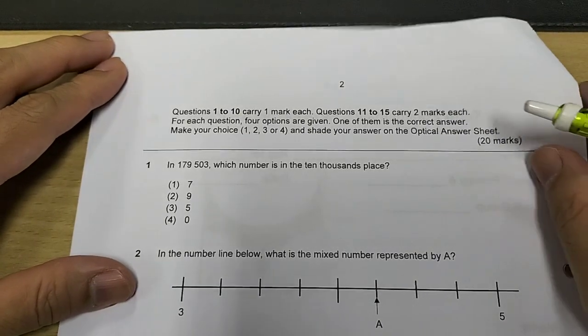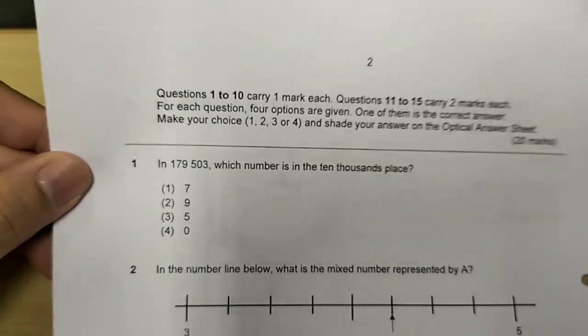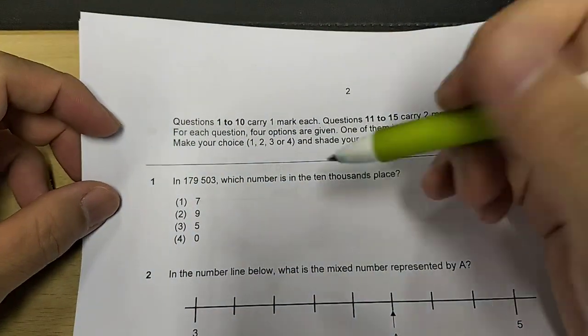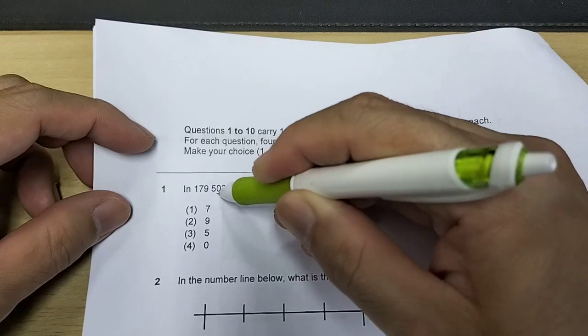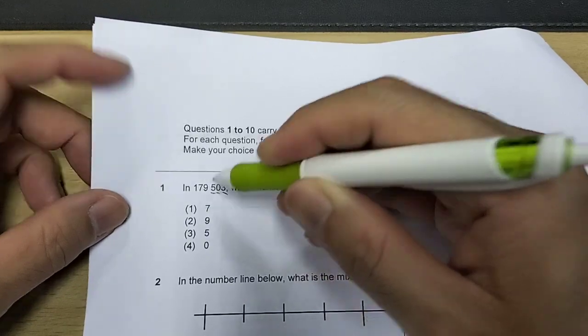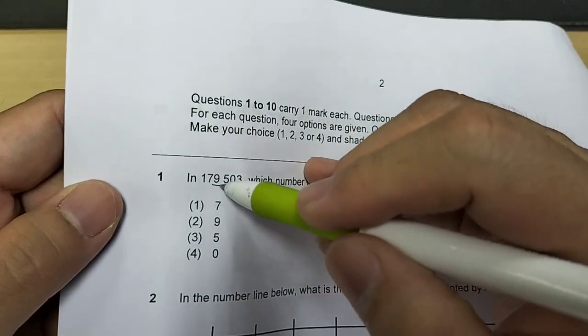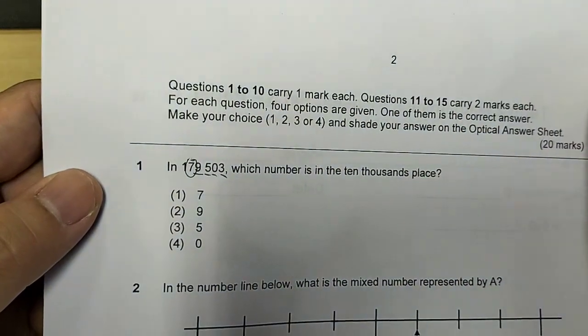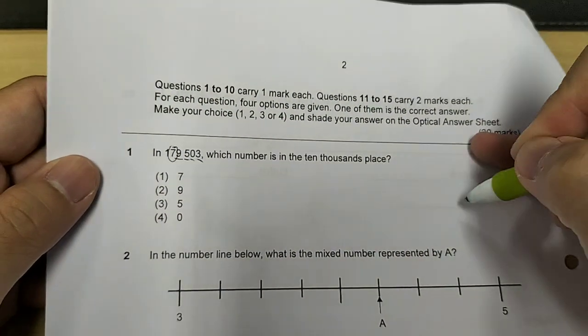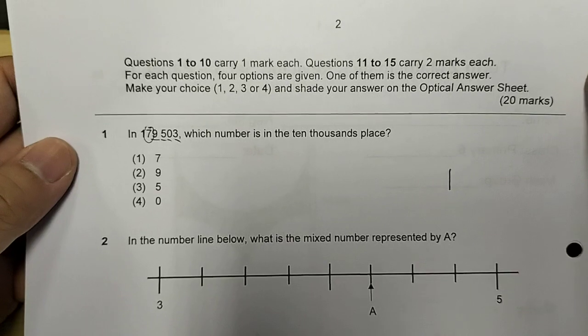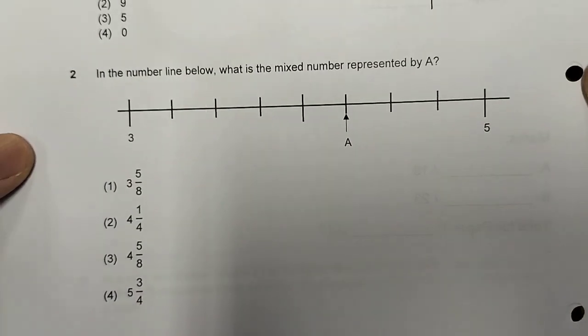Which number is in the 10,000th place? So this is in the 1's place, 10's place, 100's place, 1,000th place, 10,000th place. So the digit 7 is in the 10,000th place. Next question.